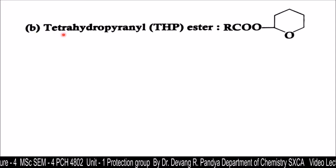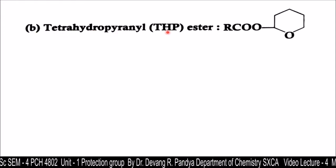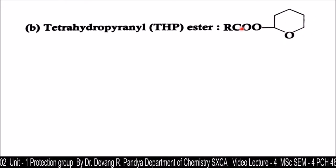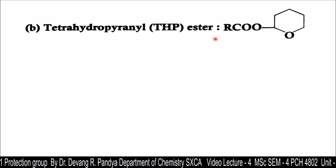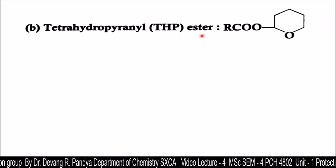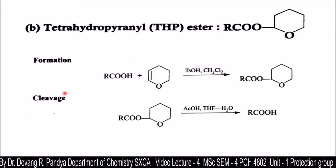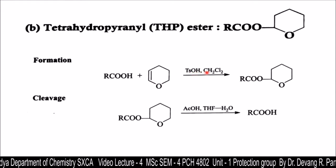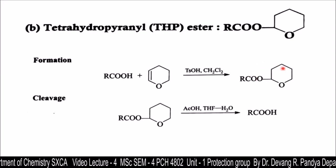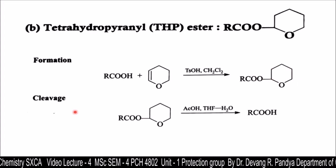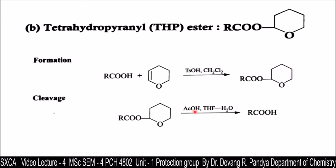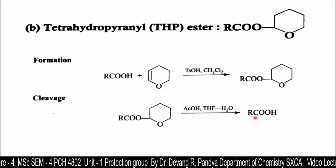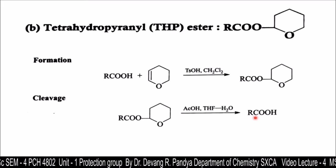Next, we study the tetrahydropyranyl (THP) ester. This is the tetrahydropyranyl group with the ester group, and we will learn how it protects the carboxylic group and then how it will deprotect it. Both formation and cleavage — that is, protection and deprotection — are given. Carboxylic acid treated with this reagent in the presence of a Lewis base and dichloromethane gives the THP ester. Similarly, the THP ester treated with an alcohol in the presence of THF and water gives back the carboxylic acid.